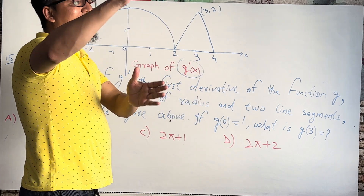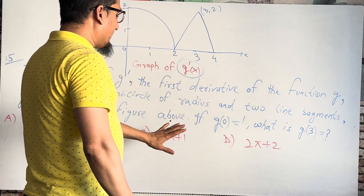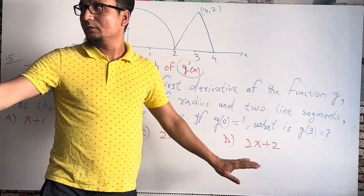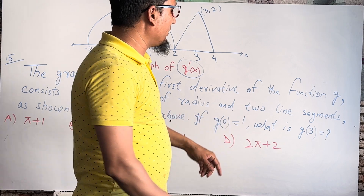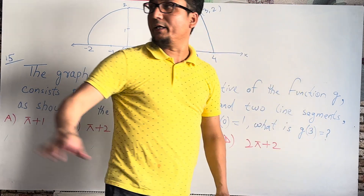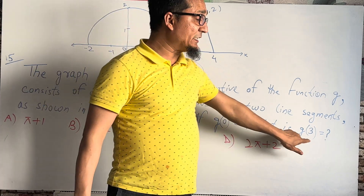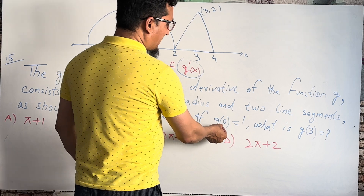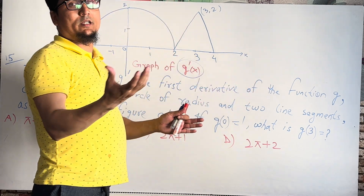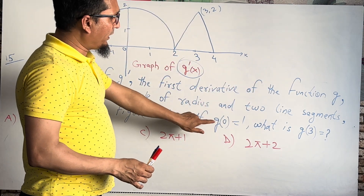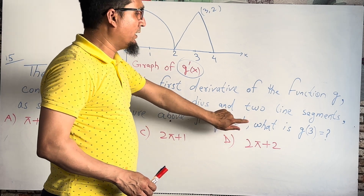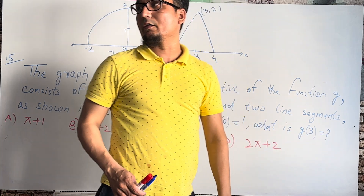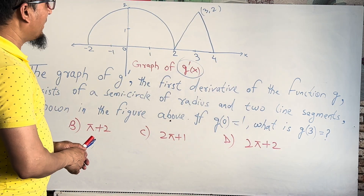G consists of a semicircle and two line segments as shown in the figure. The condition given is G(0) = 1. We have to find the value of G(3). So when G(0) = 1 is given, we need to find G(3).